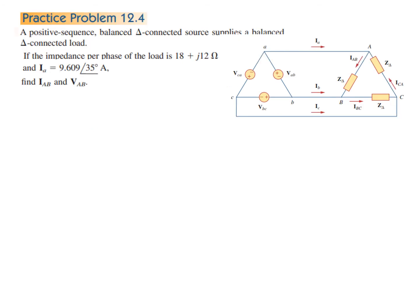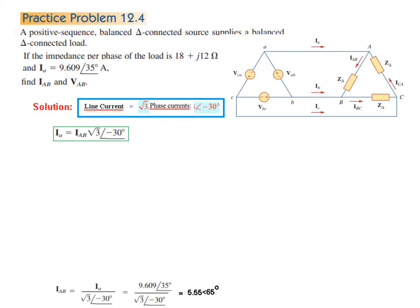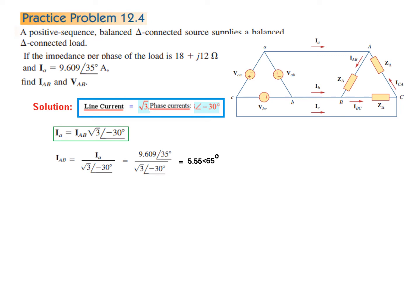Now let's solve practice problem 12.4, which is similar to the previous one except that the line current is given instead of phase voltage. The load impedance and line current are given; we have to find phase current IAB and voltage VAB. We apply the formula: line current = √3 × phase current ∠−30°, and rearrange to calculate the phase current first.